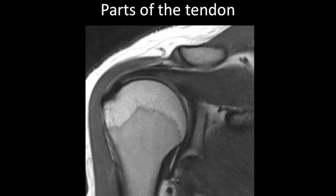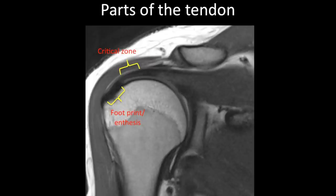It is important to know the parts of the tendon because you need to describe them in the report when describing a tear. In the supraspinatus tendon, the footprint or enthesis is where the tendon attaches to the bone. The critical zone is approximately 1 to 1.5 cm from the enthesis and is particularly important in the supraspinatus tendon. It was hypothesized to be hypovascular and prone to degenerative tears, though recent research debates this. It remains a common site for supraspinatus tears. Traumatic tears typically occur at the myotendinous junction.